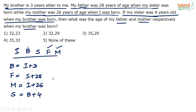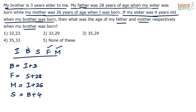So to summarize our equations: b = i + 3, f = s + 28, m = i + 26, and s = b + 4. What we need to find is the age of father and mother when brother was born — that is, when b = 0, what are f and m?